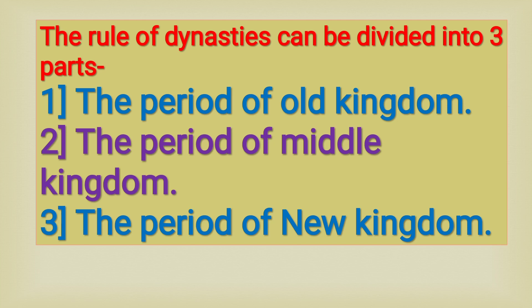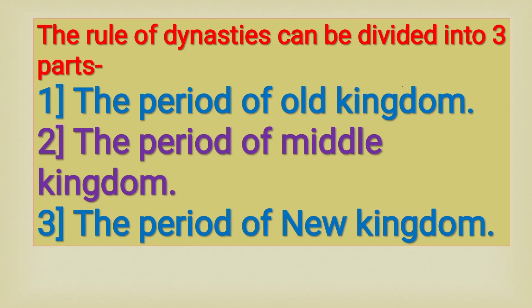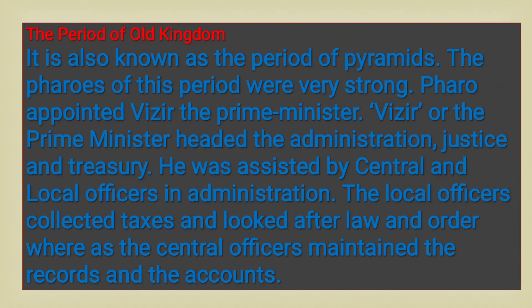The rule of dynasties can be divided into three parts: the period of old kingdom, the period of middle kingdom, and the period of new kingdom.